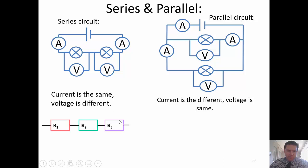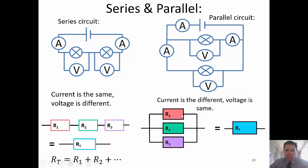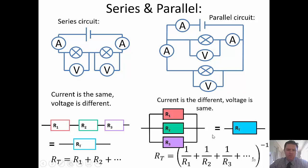In a series circuit with resistors R1, R2, R3, the total resistance is R1 plus R2 plus R3. For parallel circuits, the current has multiple paths, and we use the formula: one over R_total equals one over R1 plus one over R2 — then raise to the power of minus one. Most students miss that minus one — it's a really important part.